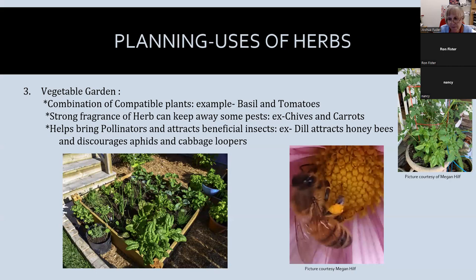I don't think you can have a tomato plant without basil — they're like soul mates. Whether in a garden, raised bed, or pot, it's said that a chemical component in basil keeps the hornworm away. Herbs are also great pollinators — honeybees go gaga over herbs when they're in flower. Dill, for example, attracts honeybees but also discourages aphids and cabbage loopers. Plant some in your pollinator garden.